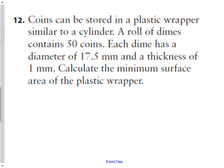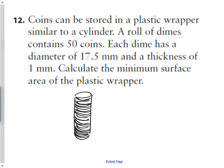Question twelve: a roll of 50 dimes is stored in a plastic wrapper similar to a cylinder. Each dime has a diameter of 17.5 mm and a thickness of 1 mm. So the cylinder's diameter is 17.5 mm and its height is 50 × 1 = 50 mm. We need to find the minimum surface area of the plastic wrap, meaning we cover both circular ends and the side.